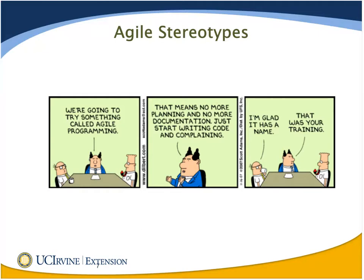Let's bring up the Dilbert cartoon — a very often-used, funny summary of Agile. They're talking about getting Agile programming, and the boss says: 'We're going to get Agile programming. That means no more planning and no more documentation — just start writing code and complaining.' It's funny because there are a lot of stereotypes about Agile: that you don't do documentation and you don't do planning.